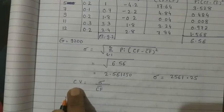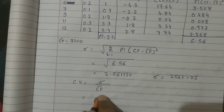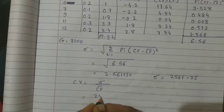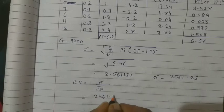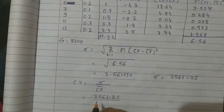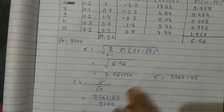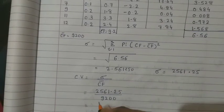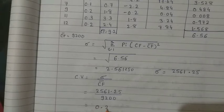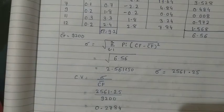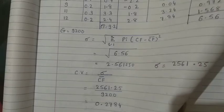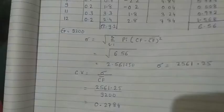Now covariance (coefficient of variation) = standard deviation divided by expected cash flow = 2561.25 divided by 9200. If you keep both in 1000s (2.561250 / 9.2), the answer is 0.2784. You can also write it directly as 0.27.